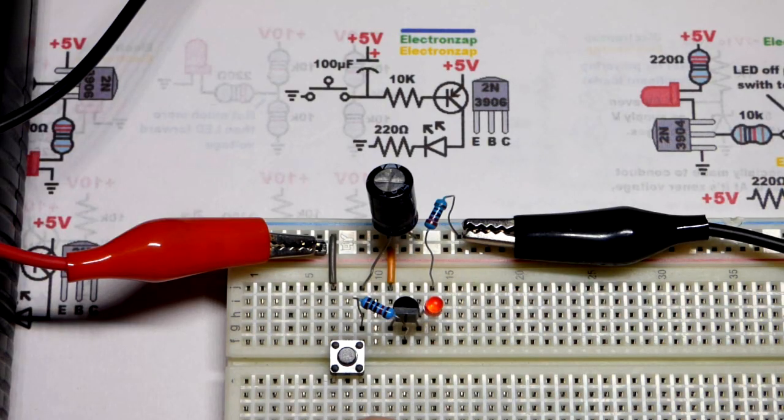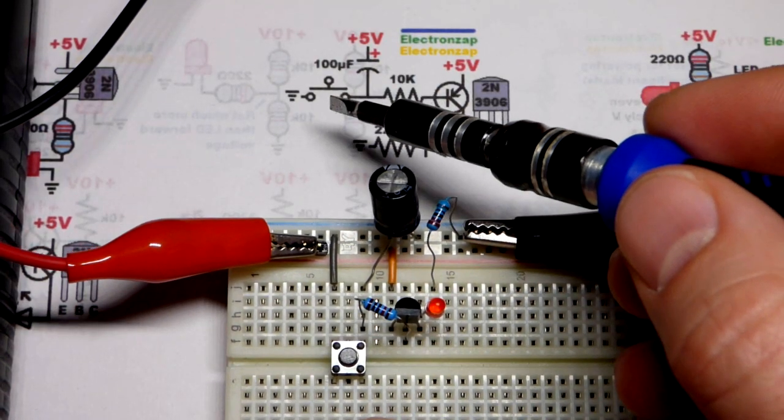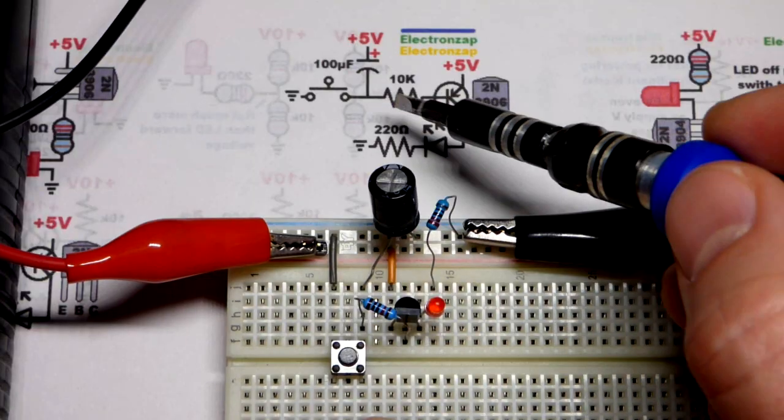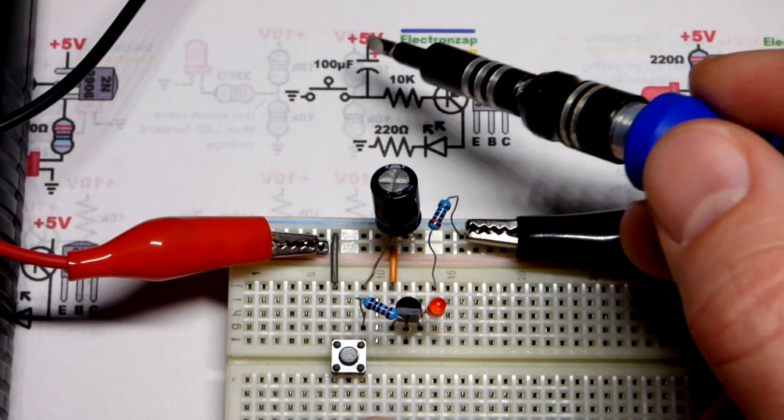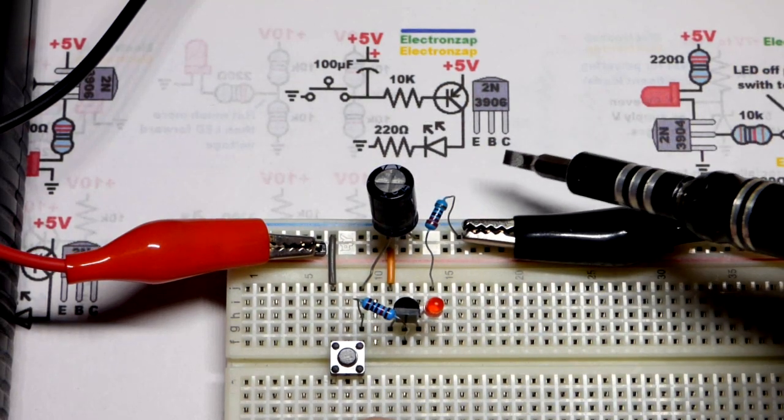It's not a sudden on and off. So again, we close the switch and we get the emitter to base current right there, a small amount to turn the transistor on. But also, you got the capacitor charged right there.